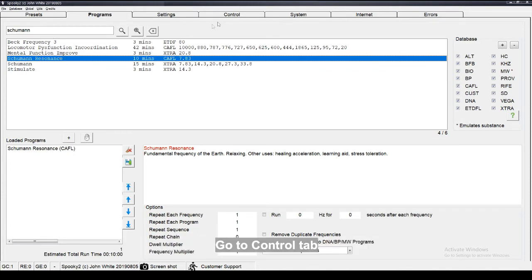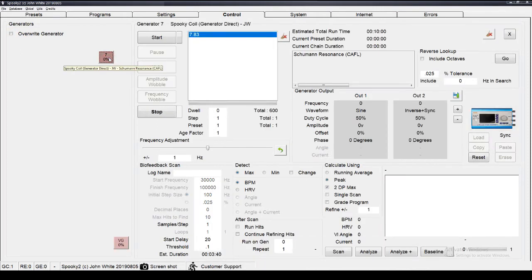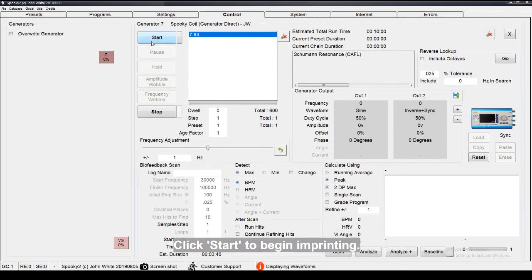Go to Control tab. Tick Override Generator and choose the generator port. Click Start to begin imprinting.